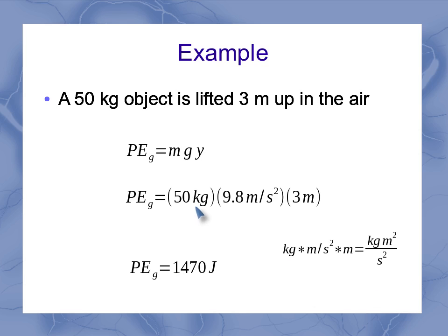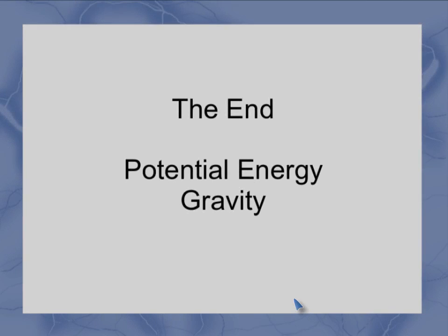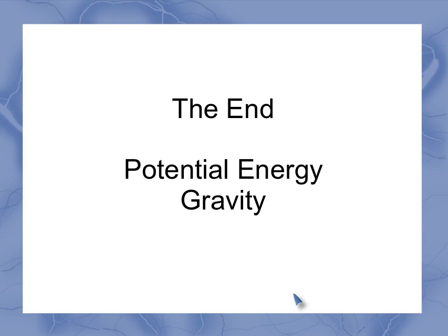Now, a quick note on the units here. If I've got kilograms times meters per second squared times meters, well, that's going to give me a kilogram meter squared per second squared. And that is equivalent to my unit of joule. So there's your potential energy of gravity.